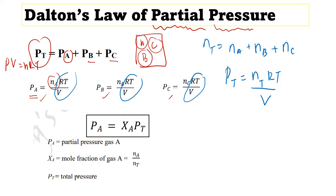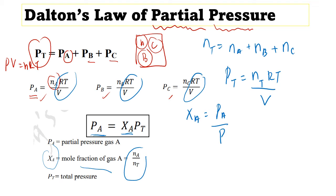A second method to find partial pressure is using the mole fraction. The partial pressure of A equals X_A times P_total, where X_A is the mole fraction of A, defined as n_A divided by n_total. We can also rearrange this so that the mole fraction of A equals P_A divided by P_total, depending on which quantity we want to calculate.